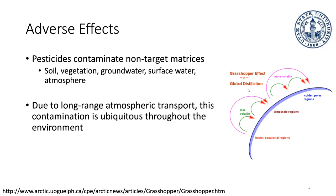It won't happen with every pesticide — only with chemicals that will essentially evaporate, known as volatilization, which is just the process of moving into the gas phase. If you spray a pesticide at the equator, it's going to be a hotter environment. If that pesticide volatilizes and becomes a gas, it's liable to move in the atmosphere and get transported based on regular air movement. If it moves up to the Northern Hemisphere to a colder location, it may settle there. Then if it heats up, the chemical can re-enter the gas phase and move again.